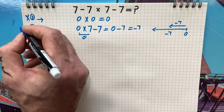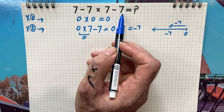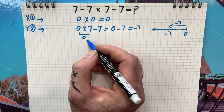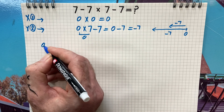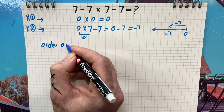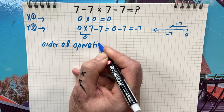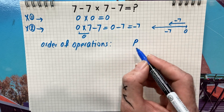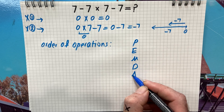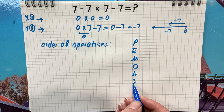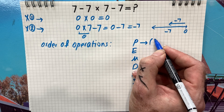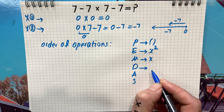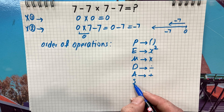To solve this type of question, we need to follow a set of rules called the order of operations. The order of operations can be remembered by PEMDAS — P stands for parenthesis, E for exponent, M for multiplication, D for division, A for addition, and S for subtraction. Remember: multiplication and division share the same level, and so do addition and subtraction.